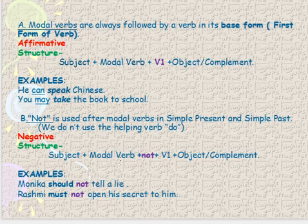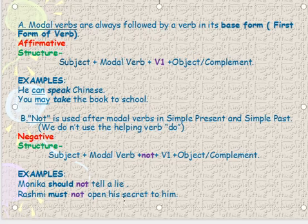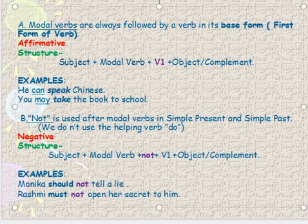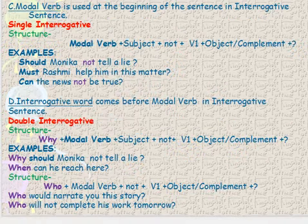For negative sentences, the structure is: Subject + Modal Verb + Not + Verb + Object. For example: 'Monika should not tell her secret.' or 'Rishmi must not open her secret to him.' So 'not' is placed after the modal verb to make it negative.